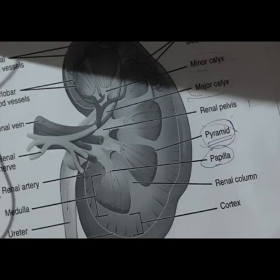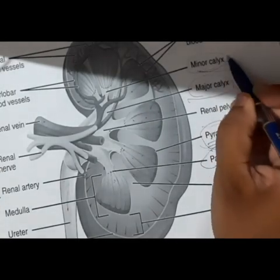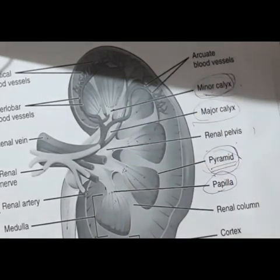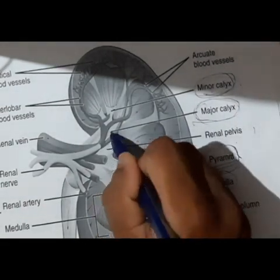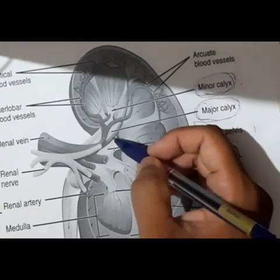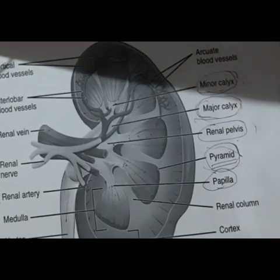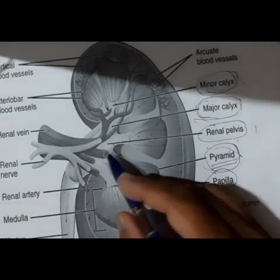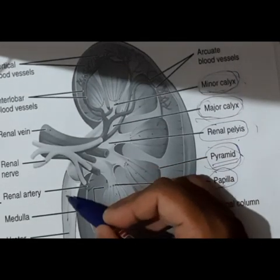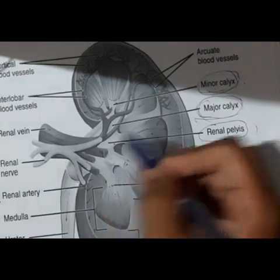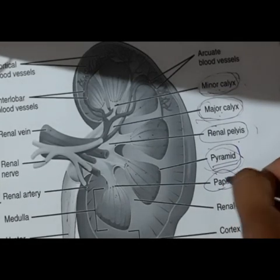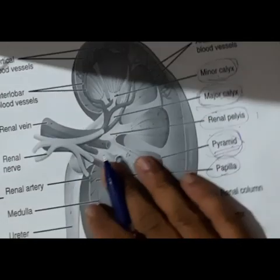Each renal papilla drains urine into a structure called the minor calyx. The minor calyx collects the urine formed from the papilla, and the minor calyces unite together to form the major calyx. All the major calyces then drain into what is called the renal pelvis. The renal pelvis is the expanded origin of the ureter within the kidney — from the renal pelvis, the ureter emerges out.